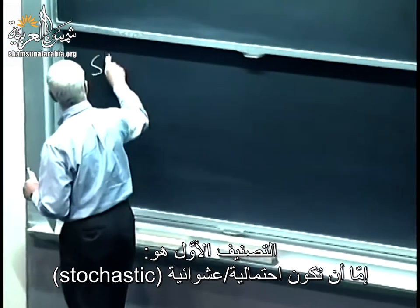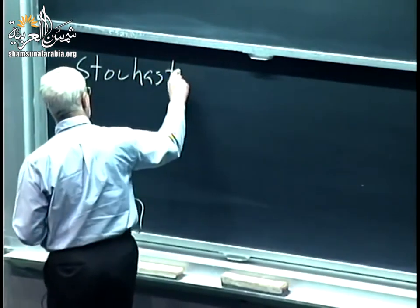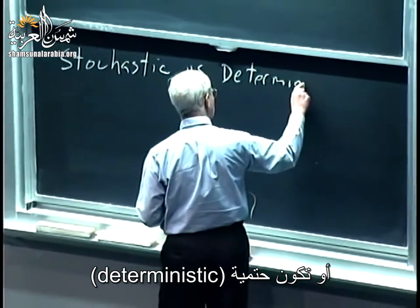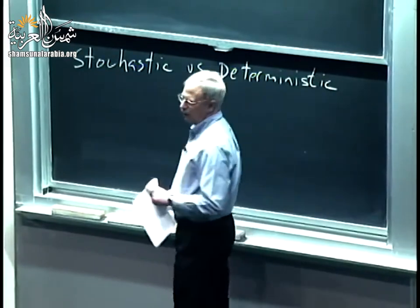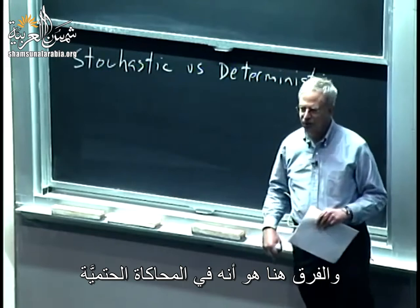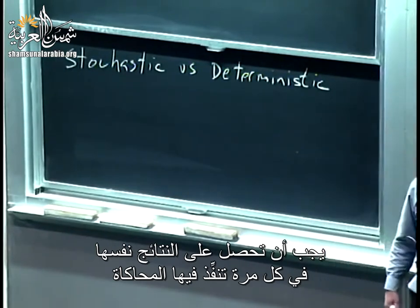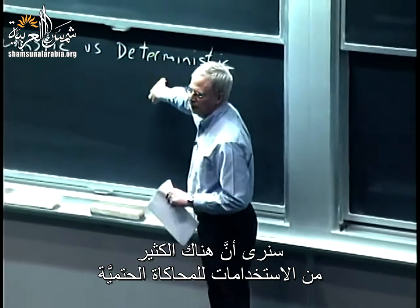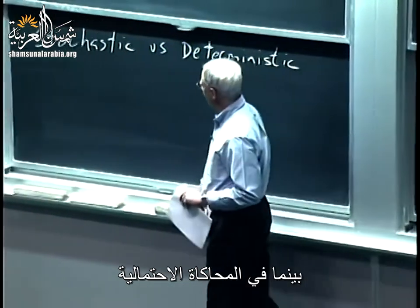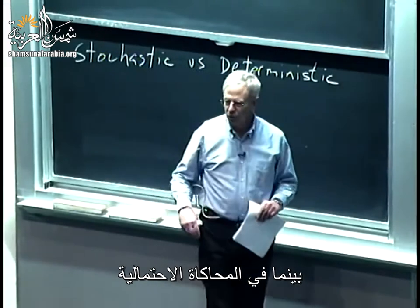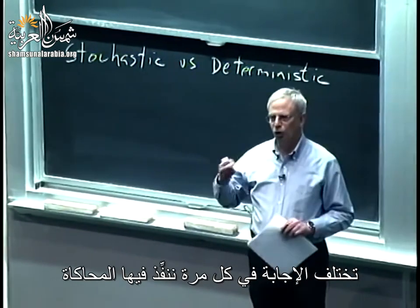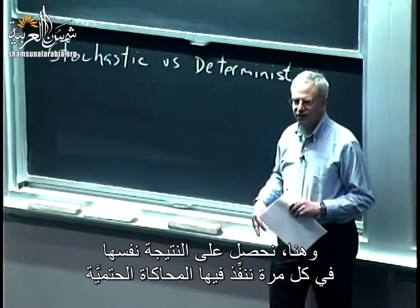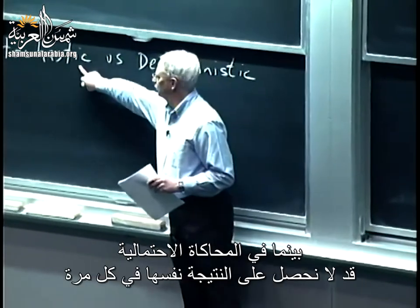The first is whether it's stochastic or deterministic. In a deterministic simulation, you get the same result every time you run it. There's a lot of use for deterministic simulations. In stochastic simulations, the answer will differ from run to run because there's an element of randomness. If you run a deterministic simulation again and again, you get the same outcome every time. With stochastic, you may not.